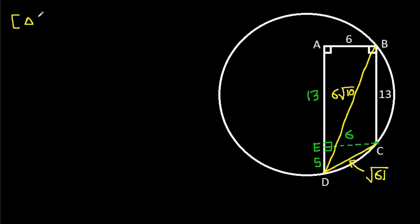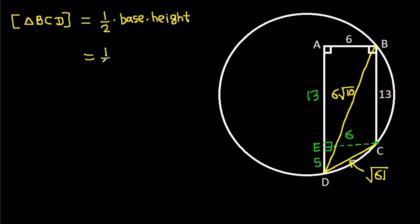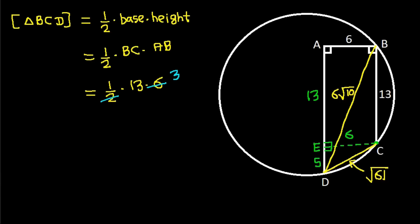Now, area of triangle BCD = (1/2) times base times height = (1/2) times BD times AB = (1/2) times 13 times 6. So this area is 39.